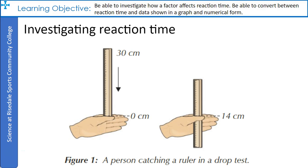You'll need another person for this experiment — this is the person whose reaction time will be tested. The person being tested should sit with their arm resting on the edge of the table to stop them moving their arm up or down during the test. Hold a ruler vertically between their thumb and forefinger, with the zero end level with their thumb and finger, then let go without giving any warning. The person being tested should try to catch the ruler as quickly as they can as soon as they see it fall. Reaction time is measured by the number on the ruler where it's caught — the further down it's caught, the slower their reaction time.